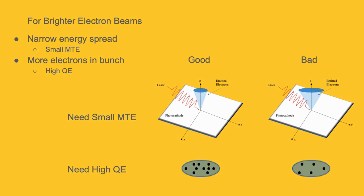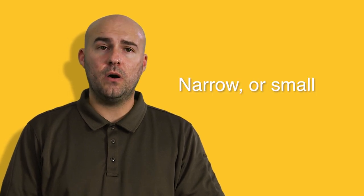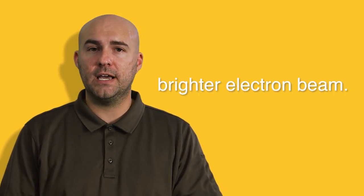And to quantify this, we have two main photoemission properties that we study. The first, and typically the most important photoemission property, is called the MTE, which stands for Mean Transverse Energy. This refers to the energy spread of the emitted electrons and it defines the volume of the beam as well as the direction that the electrons are traveling. With the MTE, we want it to be as narrow or small as possible in order to achieve a brighter electron beam.